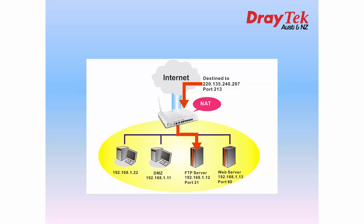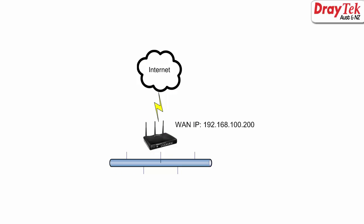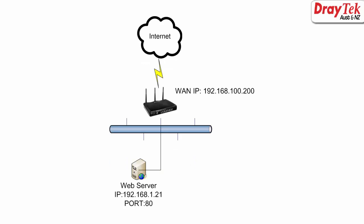Hello everyone. In this video I will show you how to set up port redirection on the Draytek Vigor router. The port redirection function will allow remote computers on the internet to access local servers through the router internet connection. In this example we have a Draytek Vigor router with WAN IP address 192.168.100.200 and there are two servers connected behind the router.